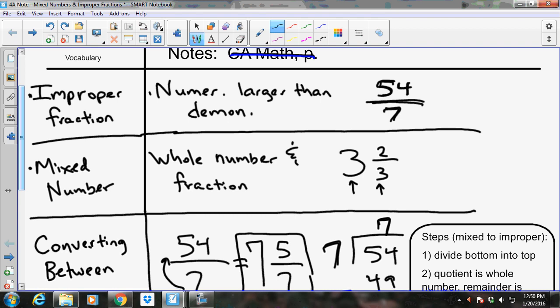Next vocabulary word is a mixed number. A mixed number is when you have a whole number and a fraction. Here we go. A whole number, three, like three whole pizzas. And then you have another pizza that's been partially eaten and there is two-thirds of that left. So you have three and two-thirds. This is a mixed number. And up on top was the improper fraction.